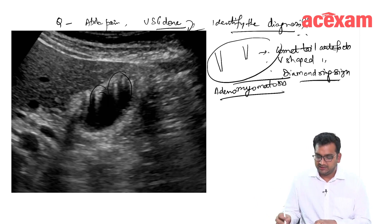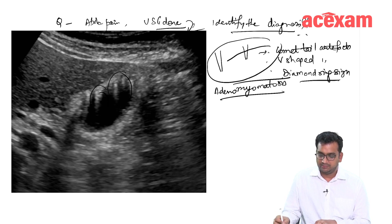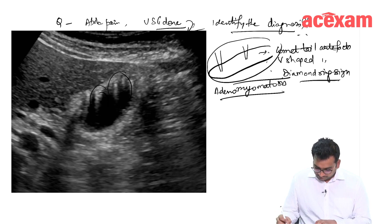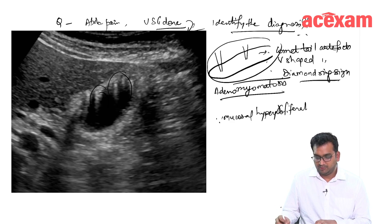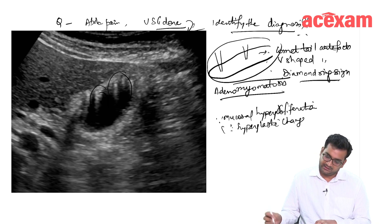What happens in adenomyomatosis is there is a hyperplastic change in the gallbladder wall because of mucosal hyperproliferation, leading to hyperplastic changes in the GB wall.